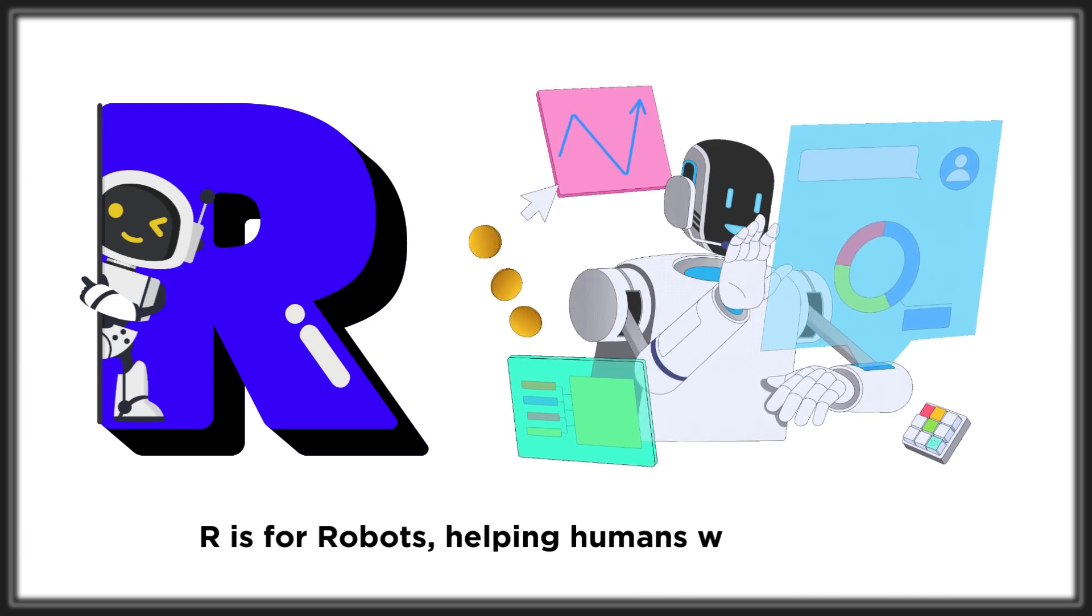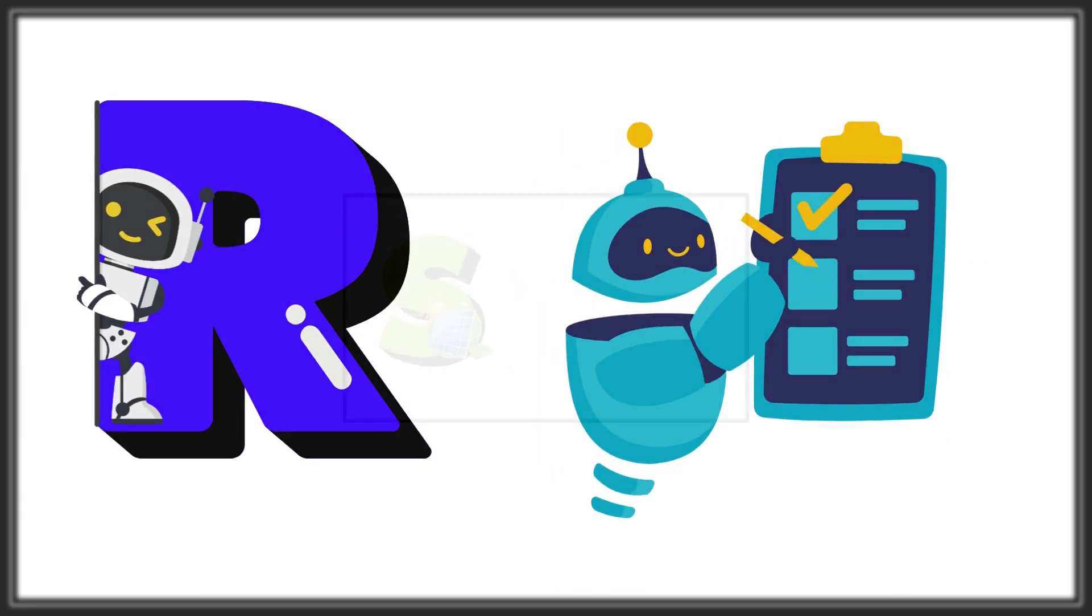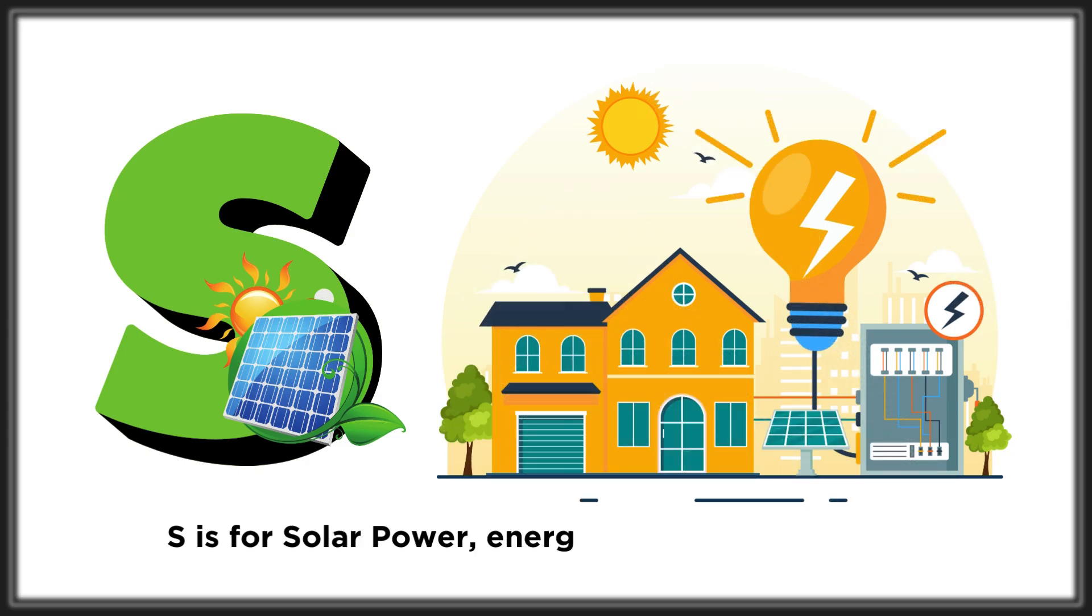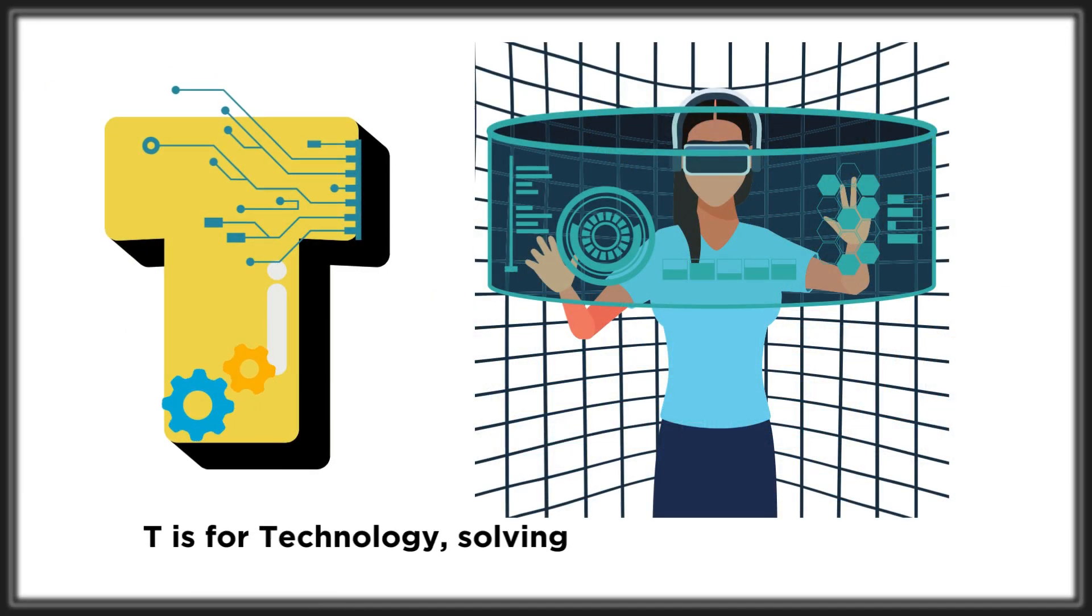helping humans work so fast. S is for solar power, energy from the shining sun. T is for technology, solving problems, getting done.